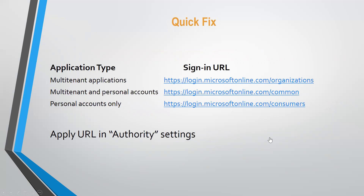The fix is to use the corresponding URL for the specific application type. For a multi-tenant app, use login.microsoftonline.com/organizations. For multi-tenant and personal, use /common. For personal accounts only, use /consumers. These must match — you cannot use /organizations for a personal account app. Once set, you must also apply this URL in the authority setting in your application code and save it to enable the app to run as expected.